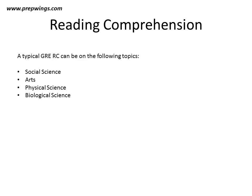A typical GRE RC can be on the following topics: it can be a social science RC, an arts RC, a physical science RC, or a biological science RC. You can also get an RC outside of these topics.